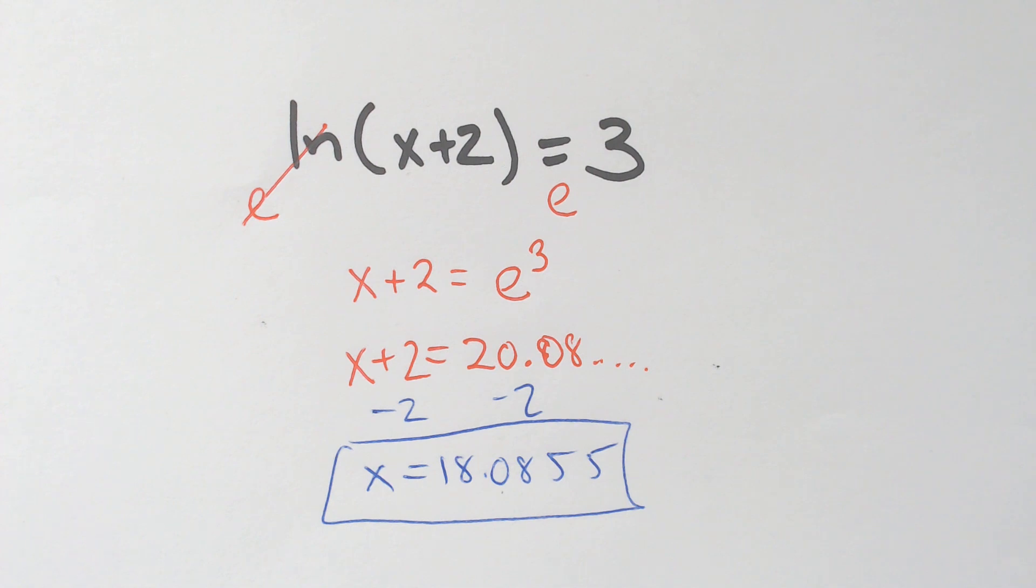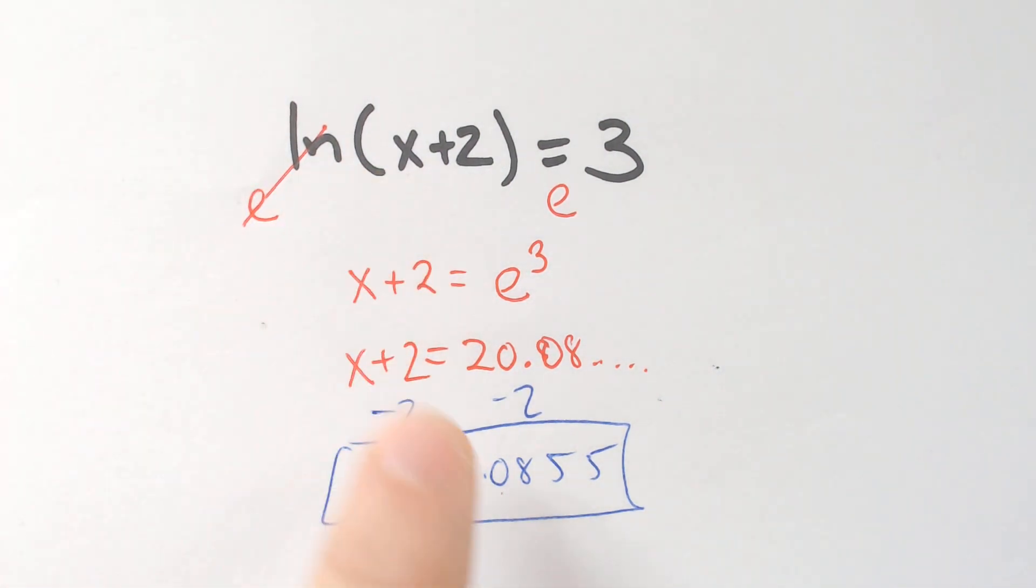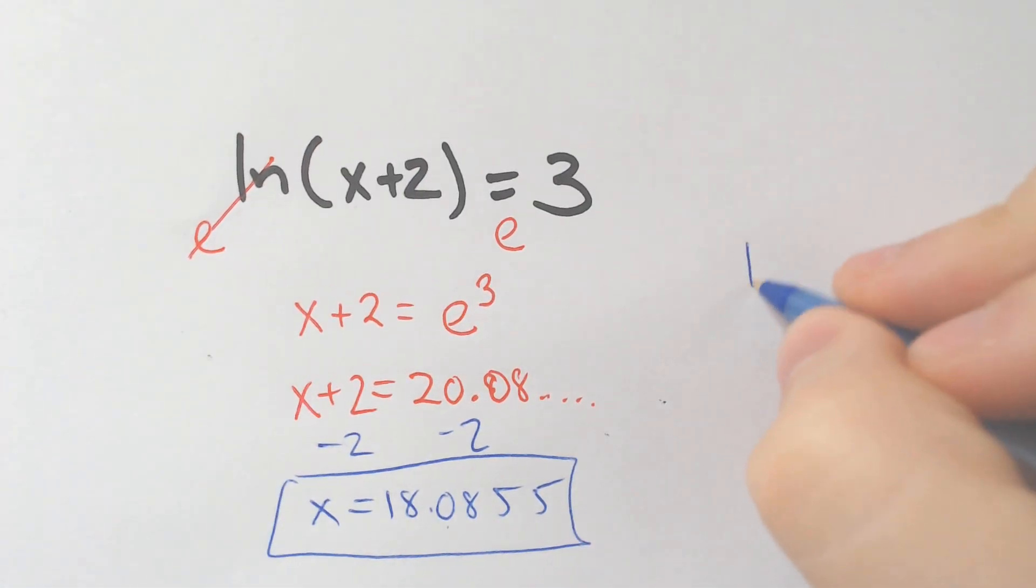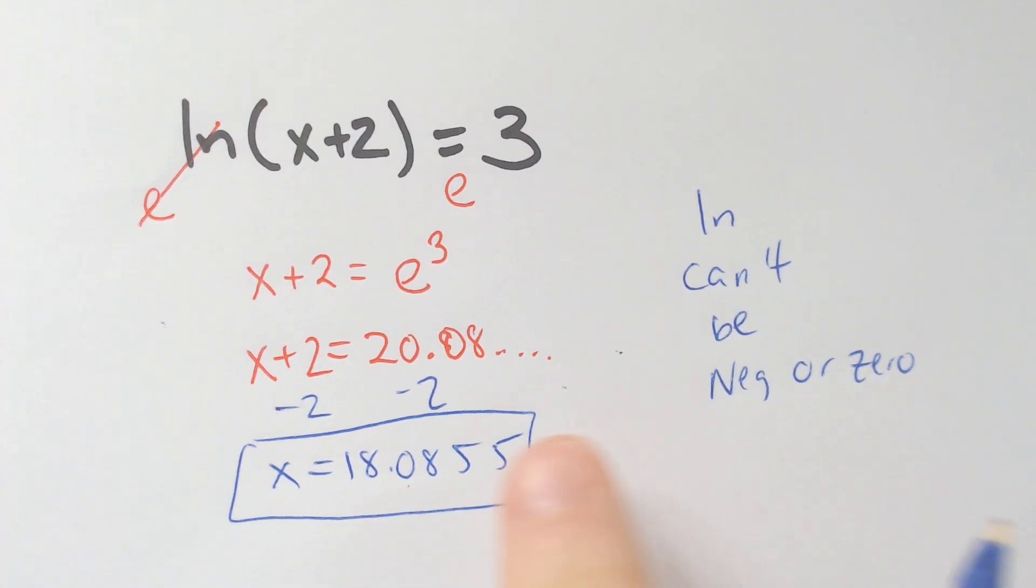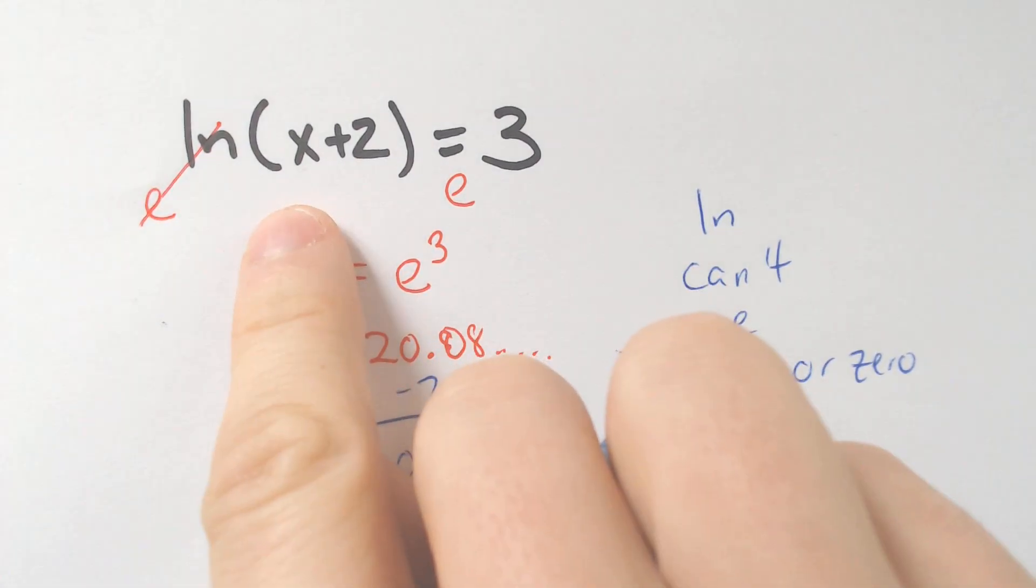Now, one thing that is different about E's and LNs is when you have an LN equation, you need to check your solution because you are not allowed to take the LN, can't be negative or zero. So essentially, it has to be greater than zero.